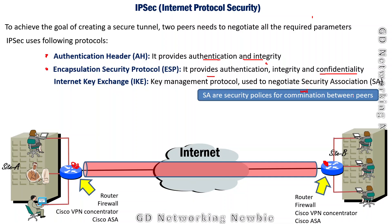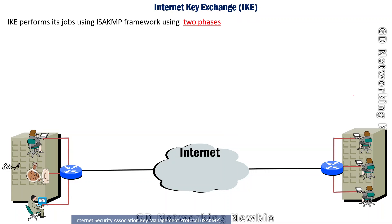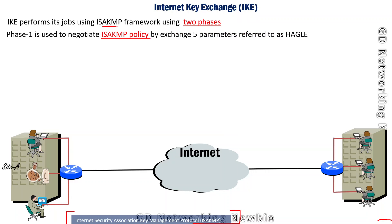The security policy for communication between two routers is known as a security association. This security association is negotiated using IKE. IKE itself performs its job using the ISAKMP framework, which stands for Internet Security Association Key Management Protocol. To negotiate the security association, IKE uses two phases. In the first phase, IKE negotiates the ISAKMP policy and exchanges five parameters referred to as HAGLE — H, A, G, L, E.